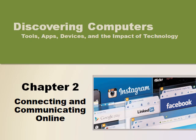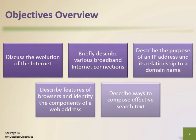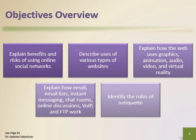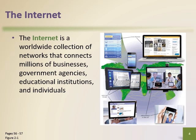Hello everyone, this is Chapter 2 of the book 'Connecting and Communicating Online.' This chapter covers how the internet evolved, how you can connect and communicate online. We will discuss broadband internet connections, the purpose of an IP address and its relationship to domains, features of browsers, components of a web address, and how to search effectively. We will also explain the risks of online social networks, types of websites, how websites use graphics and multimedia, how email works, and the rules of netiquette.